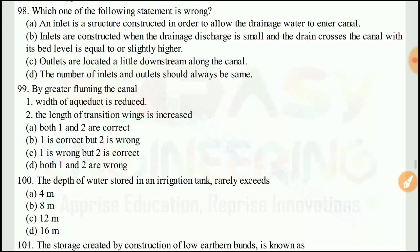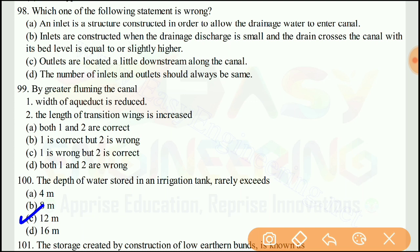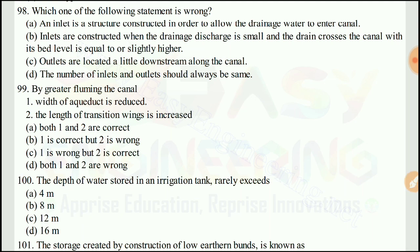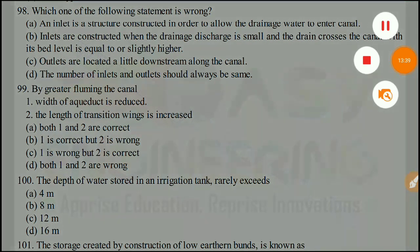Question 100 (last question): The total depth of water stored in an irrigation tank rarely exceeds — the right answer would be C, 12 meters. I hope you liked this video; please share it as much as possible. Thank you for watching.